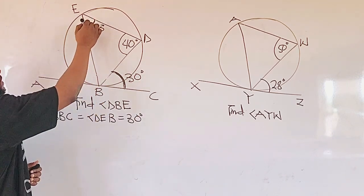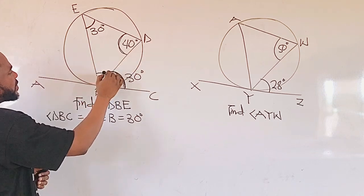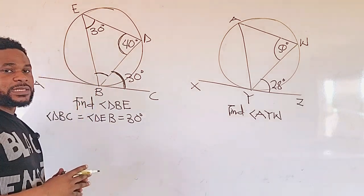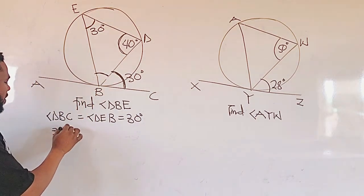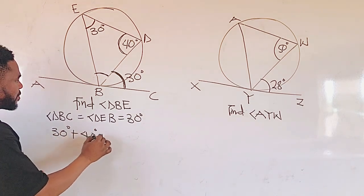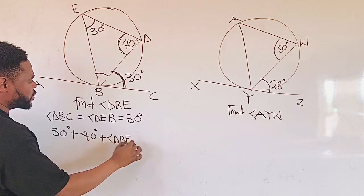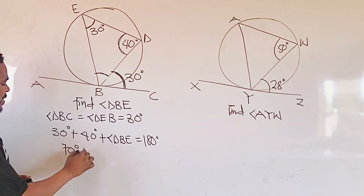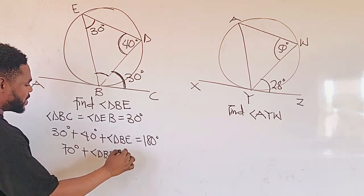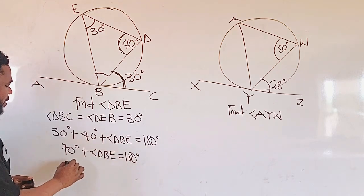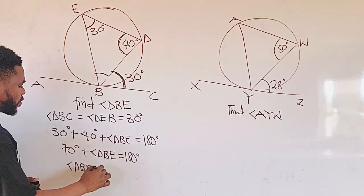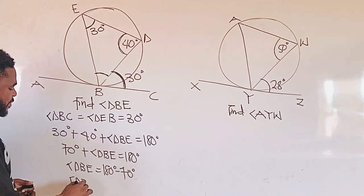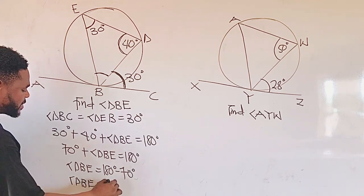Now, if the angle here is 30 and the angle here is 40, and we are looking for this angle, we are going to sum all the angles within the triangle and equate it to 180 degrees. Therefore, we can say 30 plus 40 plus angle DBE should be equal to 180. So 70 plus angle DBE equals 180, and angle DBE will be equal to 180 minus 70. Therefore, angle DBE will be equal to 110 degrees.